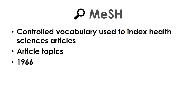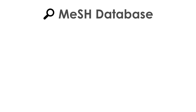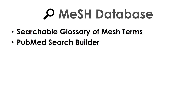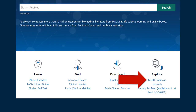MESH started in 1966 but has been updated annually with new terms. Each article in PubMed will have a list of assigned MESH terms. The MESH database is a searchable glossary of all MESH terms. It also includes helpful tools to make searching easier, and is linked on the homepage of PubMed.